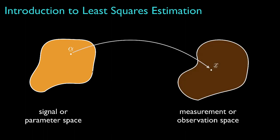Then we'll think about how the parameter might influence some observations or measurements that we might take. For example, if the parameter is the air temperature for a room, the observations might be the readings from five thermometers placed in five different positions in the room.